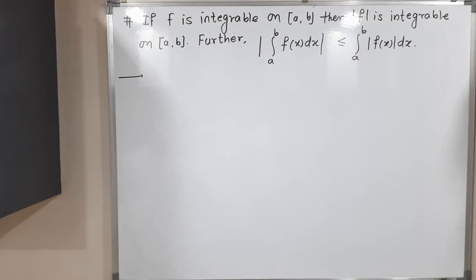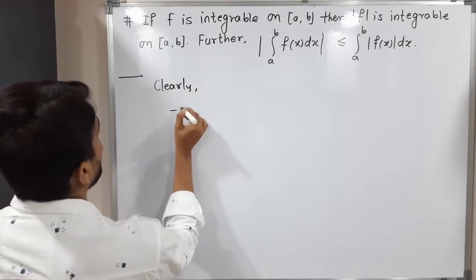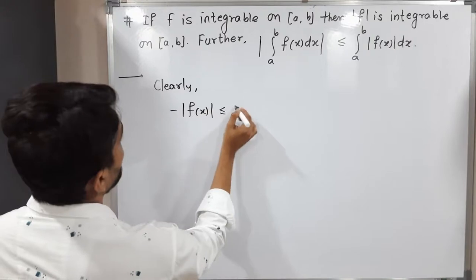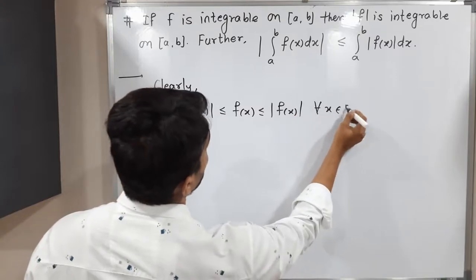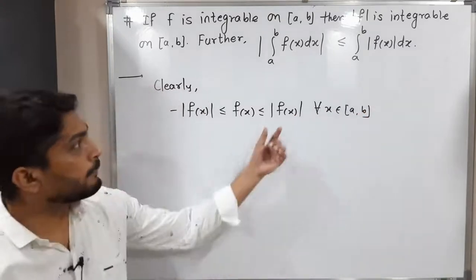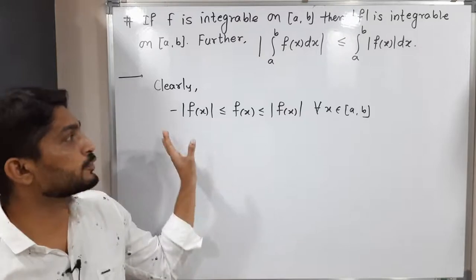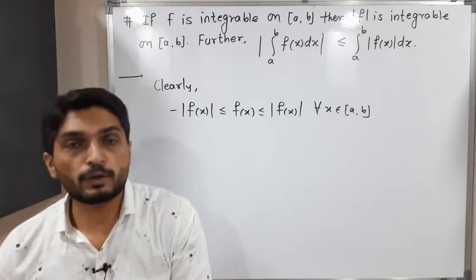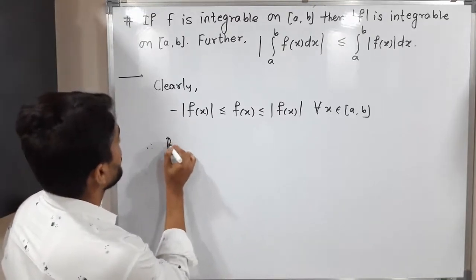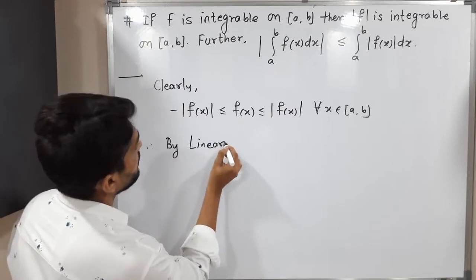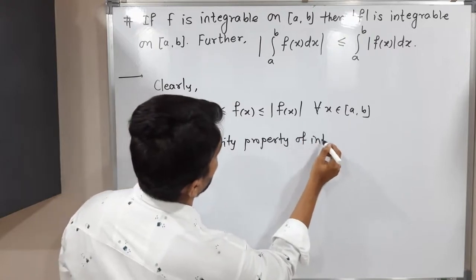Let us prove the second part now. Clearly, one thing we can write: −|f(x)| ≤ f(x) ≤ |f(x)|, and this is true for all x belonging to the closed interval [a, b]. When you take the modulus, it gives a larger or equal value, and when you apply minus to that modulus it gives the smallest value. So f(x) always lies between −|f(x)| and |f(x)|. After that, by the linearity property of integrals.